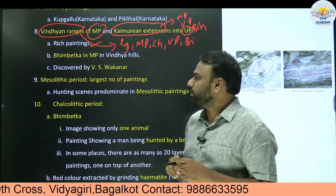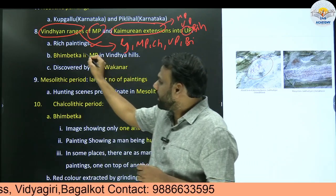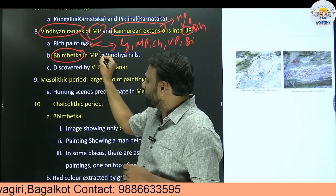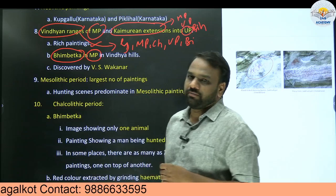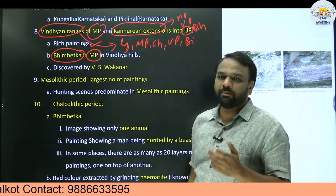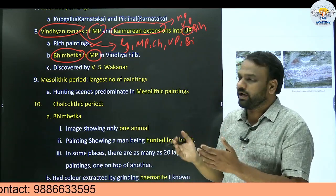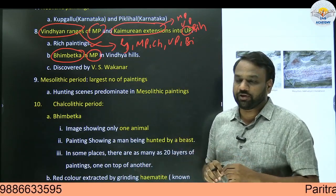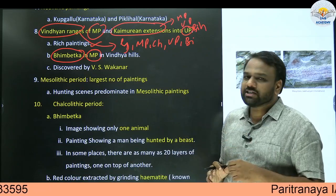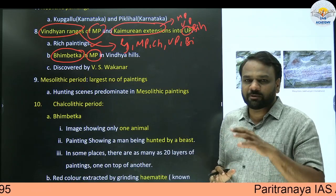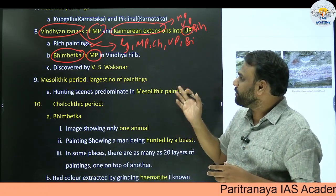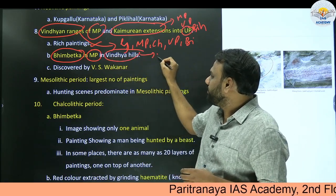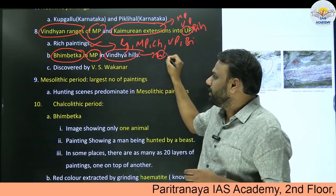An important point to note: Bimbetka is an important historic place, present in Madhya Pradesh. Questions can be framed like 'Where is Bimbetka located?' - it is in Madhya Pradesh. When asked on which mountain ranges it is present - whether Vindhyas, Western Ghats, or Kaimur - it is present on the Vindhya Hills.